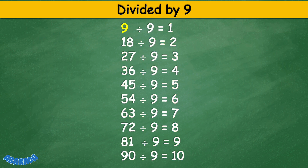Divided by 9: 9 divided by 9 equals 1, 18 divided by 9 equals 2, 27 divided by 9 equals 3, 36 divided by 9 equals 4, 45 divided by 9 equals 5, 54 divided by 9 equals 6, 63 divided by 9 equals 7, 72 divided by 9 equals 8, 81 divided by 9 equals 9.